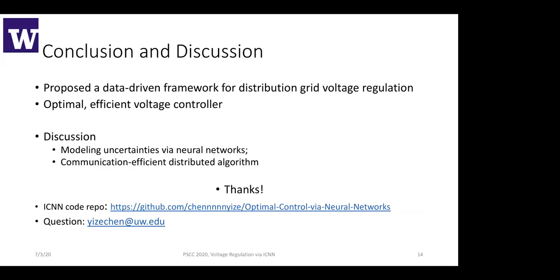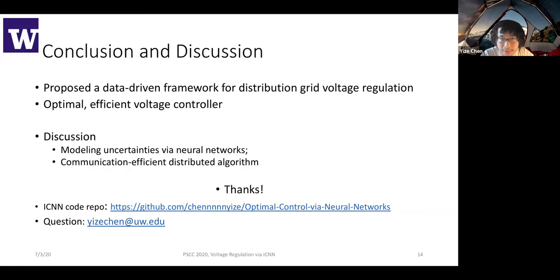Thank you. Good talk — even though you went two minutes over. We have three questions. The first, from Robert: in this kind of closed-loop application of a neural network, can there be any problems from wrong or incomplete learning? Do the control actions distort the learning results? The response is that this approach is a separate approach — separate stages for both training and regulation. Essentially, we do training assuming all the data is there, so the control is not affecting the training stage.